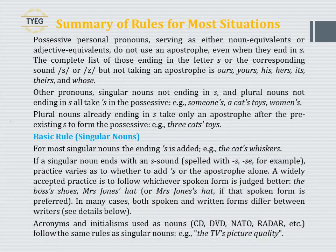Possessive personal pronouns, serving as either noun equivalents or adjective equivalents, do not use an apostrophe, even when they end in S. The complete list of those not taking an apostrophe is: ours, yours, his, hers, its, theirs, and whose. Other pronouns, singular nouns not ending in S, and plural nouns not ending in S all take 's in the possessive — for example, 'someone's', 'a cat's toys', 'women's'.